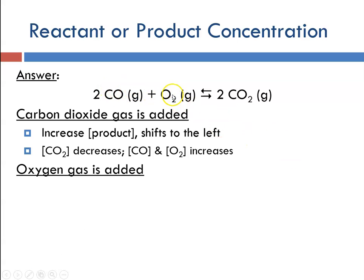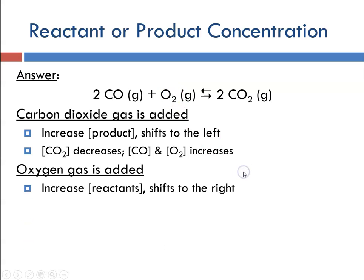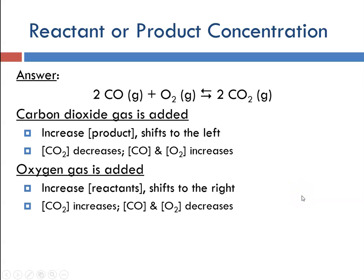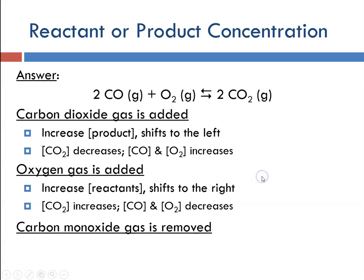If we were to add oxygen, which is a reactant, then we would expect a shift to the right to form products. That would mean that the concentration of carbon dioxide would increase and carbon monoxide and oxygen would decrease.